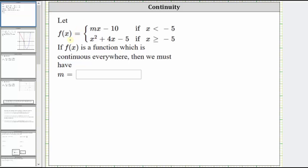We are given the piecewise defined function f of x equals mx minus 10 if x is less than negative five, and f of x equals x squared plus four x minus five if x is greater than or equal to negative five.